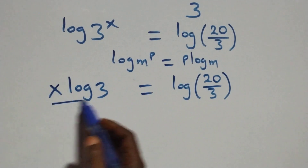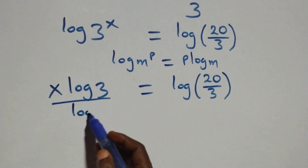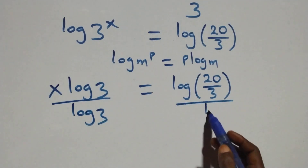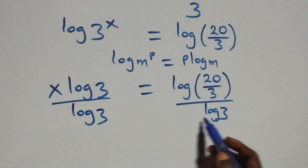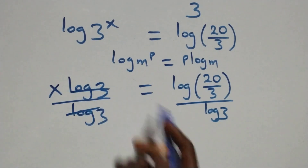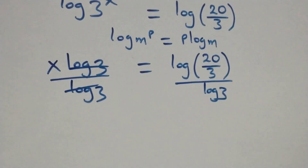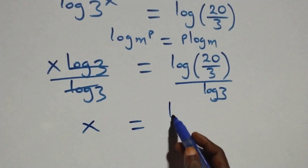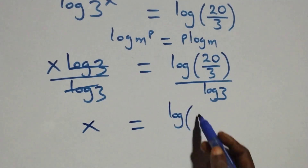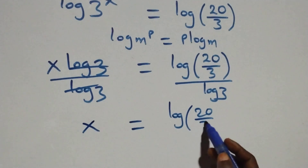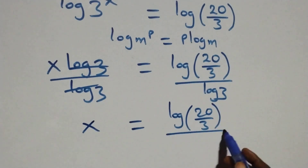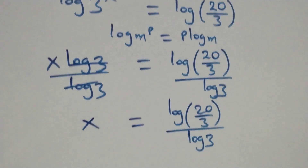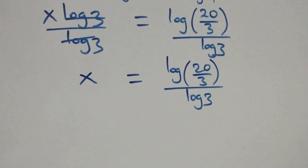The next step: we divide both sides by log 3. That is, divide this side by log 3 and also divide this side by log 3. The log 3 terms cancel each other.